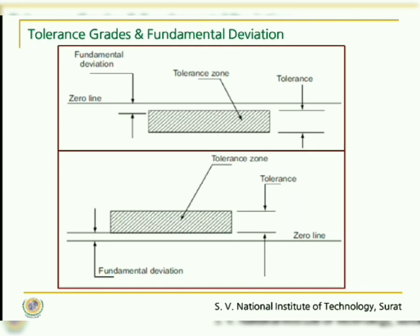In one particular case where the tolerance zone is below the zero line, the upper limit will indicate the upper deviation, and this upper deviation will become the fundamental deviation. Similarly, when the tolerance zone lies above the zero line, the lower limit which indicates the lower deviation becomes the fundamental deviation. So in IS 919, we use only the concept of tolerance zone and fundamental deviation.